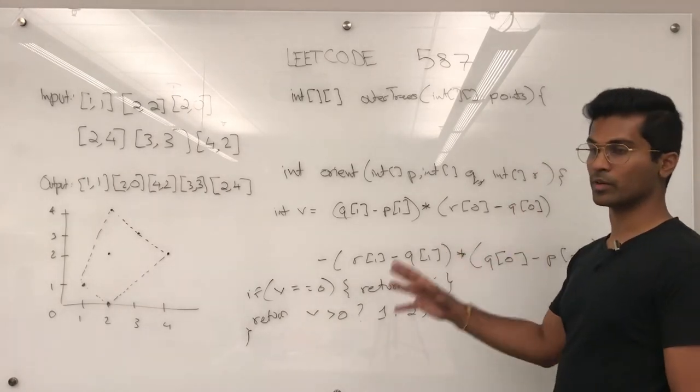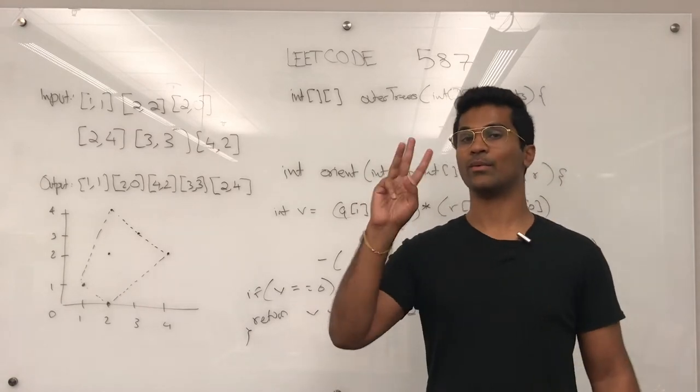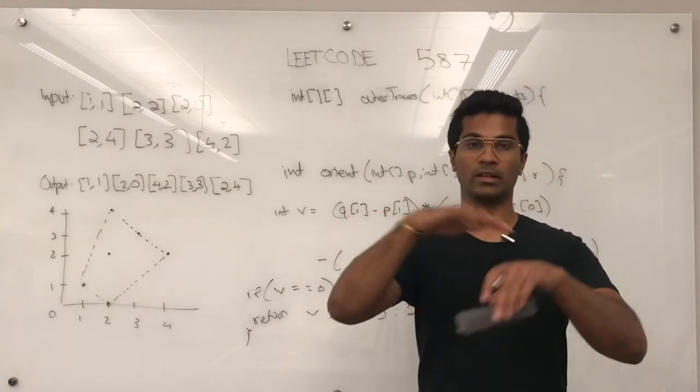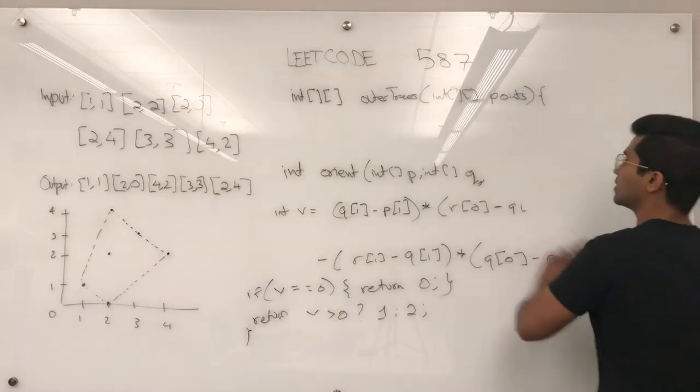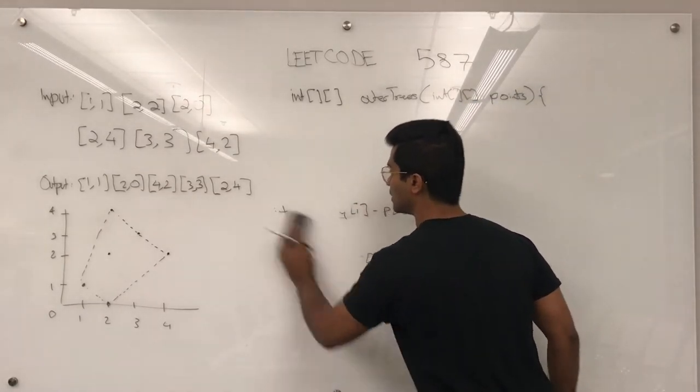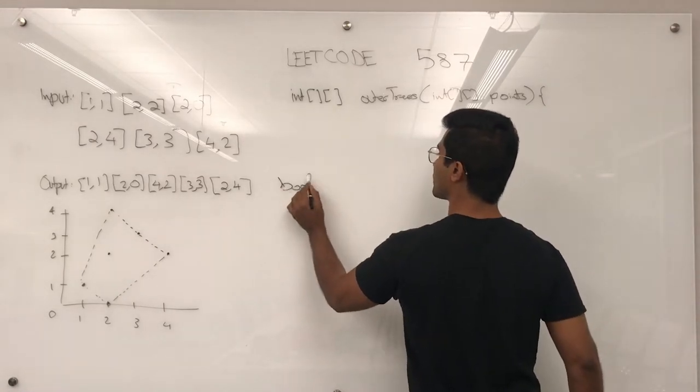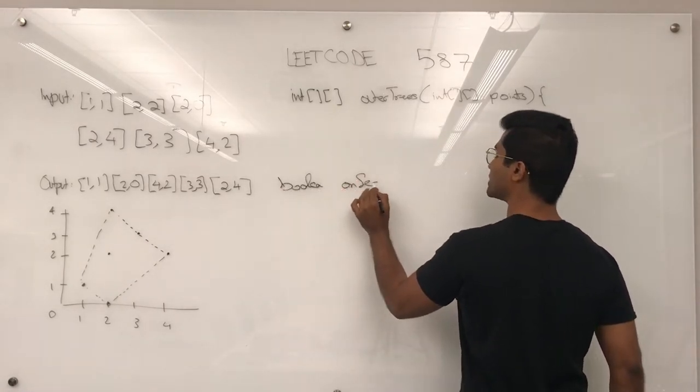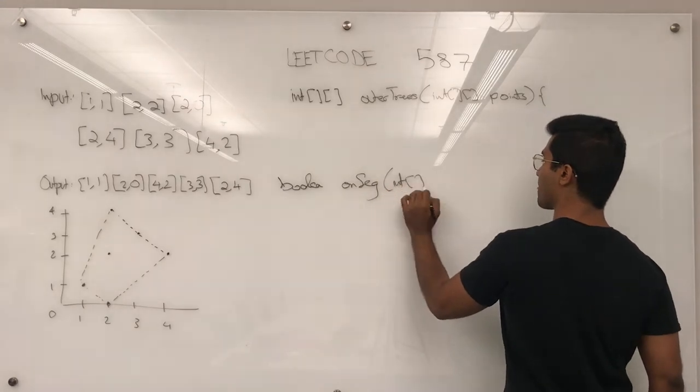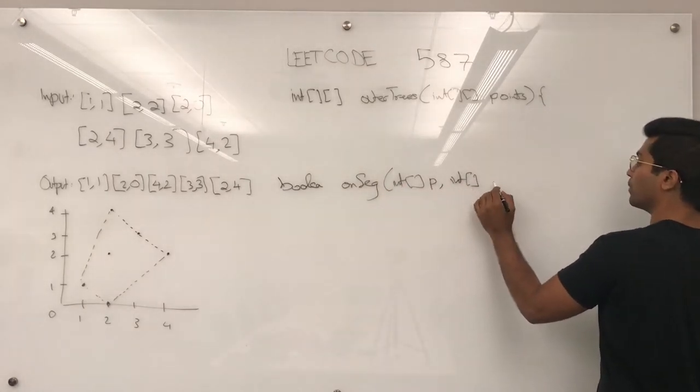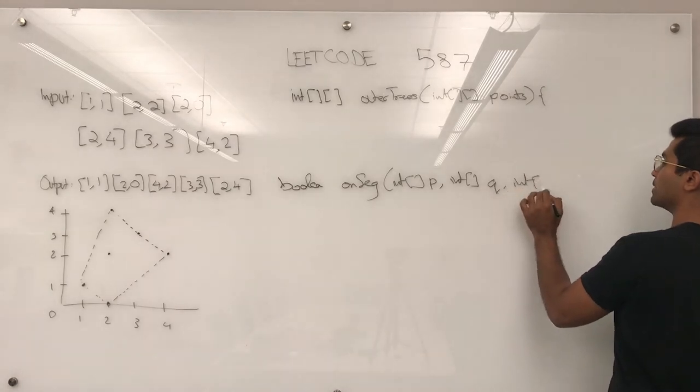Now that we wrote the orient function, let's see if when three points are linear, in the case where v is equal to 0, let's see if they align the same line segment. So boolean on seg int p, int point q, and point r.